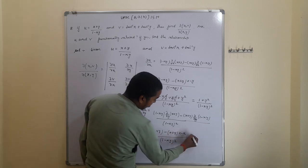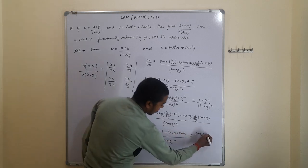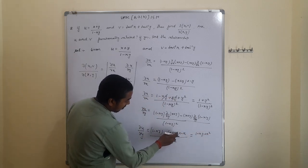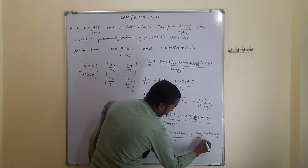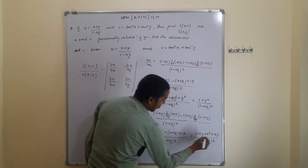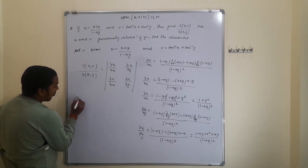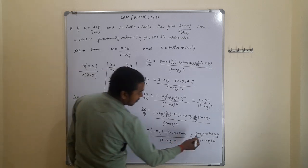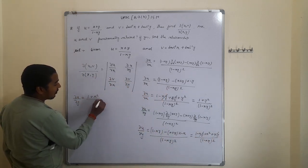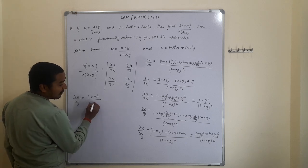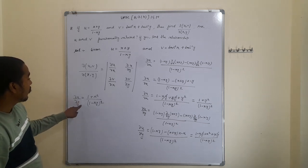Expanding the numerator: (1 - xy) + x(x + y) = 1 - xy + x² + xy. The terms -xy and +xy cancel out, leaving 1 + x². Therefore, ∂u/∂y = (1 + x²) / (1 - xy)².